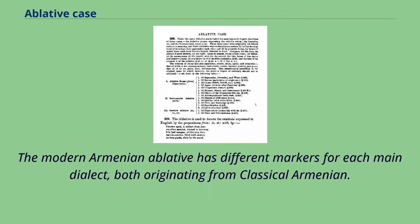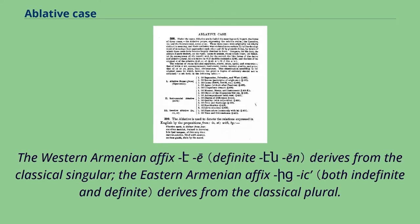The modern Armenian ablative has different markers for each main dialect, both originating from classical Armenian. The western Armenian affix -ē derives from the classical singular form, while the eastern Armenian affix -ic derives from the classical plural form.